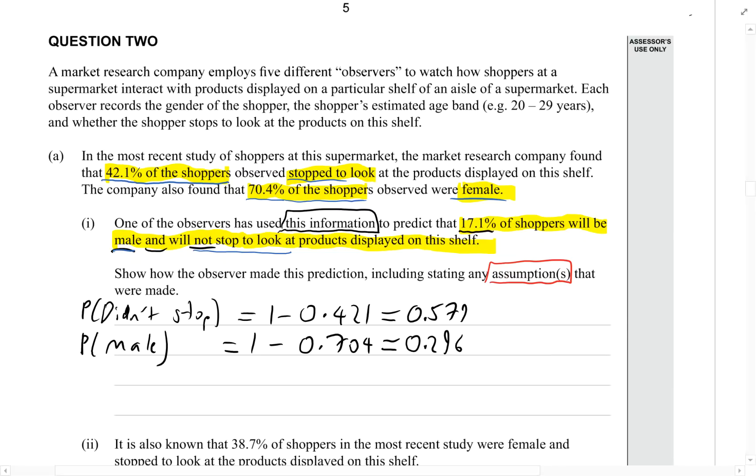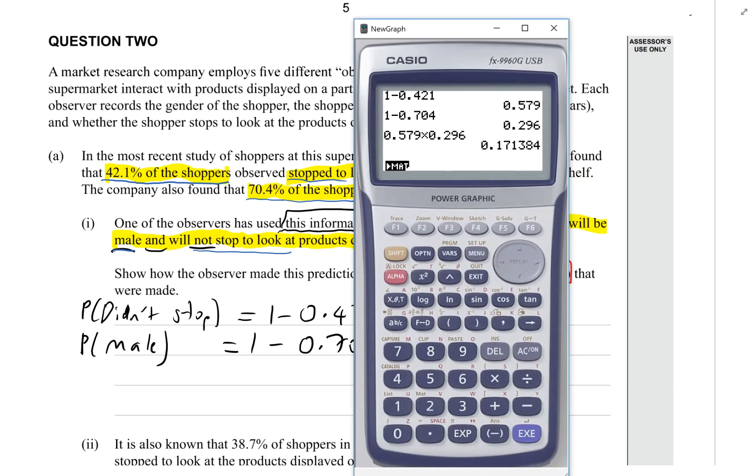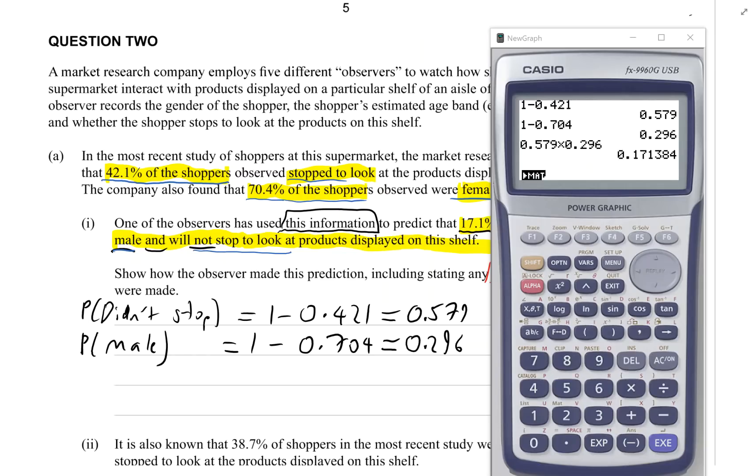They must have multiplied them. Because normally if we want to find the probability of two events happening, if we know they're independent, we multiply them. We multiply the probabilities of each event. And we get, sure enough, we get 17.1%, 0.171. So that explains where the observer got that figure from.